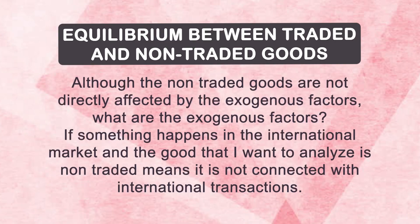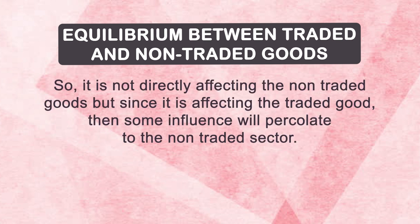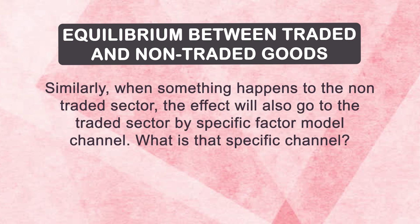Although non-traded goods are not directly affected by exogenous factors — if something happens in the international market and the good is non-traded, it is not directly connected with international transactions — since it is affecting the traded good, some influence will percolate to the non-traded sector. Similarly, when something happens to the non-traded sector, the effect will go to the traded sector through the specific factor model channel, which I will discuss with a simple example.